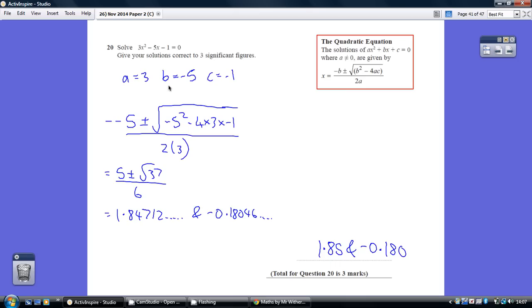So substituting in, first the bit we have to be careful about is it's minus b. So minus whatever b is. So b is minus 5. So minus minus 5. And minus minus 5 is plus 5. So a common mistake is to have minus 5 there. It needs to be plus 5.